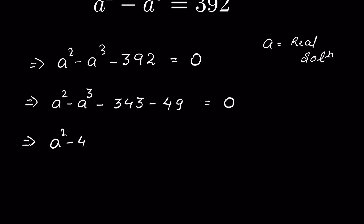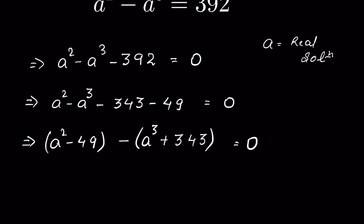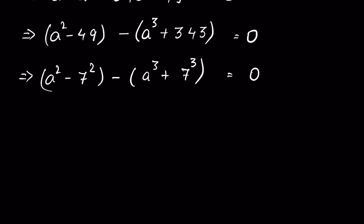Rearranging — without changing the equation — we group a squared minus 49 together, then minus the quantity a cubed plus 343 in brackets, all equal to 0. We recognize that 49 is 7 squared and 343 is 7 cubed.